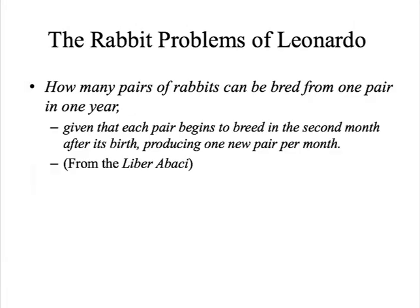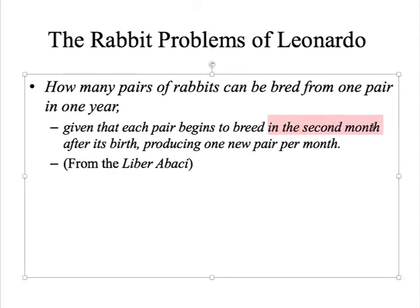Okay, now we are going to solve this rabbit problem of Leonardo. So we have a pair of rabbits. They are going to breed for one year, given the condition that each pair begins to breed in the second month after its birth, producing one new pair per month.